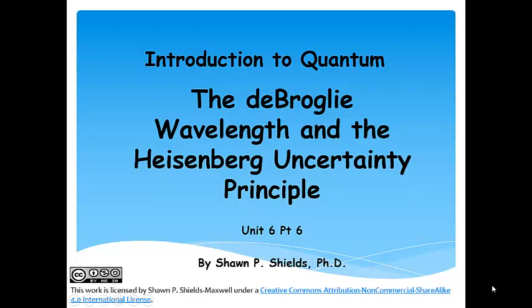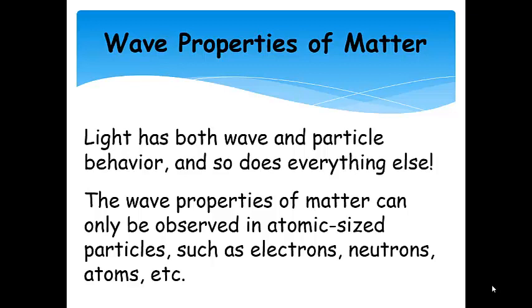The de Broglie wavelength and the Heisenberg uncertainty principle. Okay, so we've spent quite a bit of time discussing the wave-particle duality of light. For instance, we saw that light has wave character when we talked about Young's double-slit diffraction experiment. Now, we saw particle behavior in the photoelectric effect experiment and also in the interaction of light with atoms, such as in the Bohr model. Now, what we didn't say is that everything else has wave character as well.